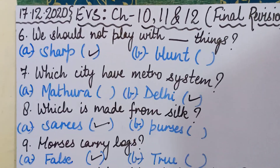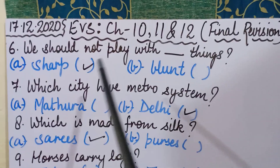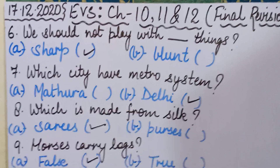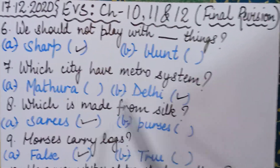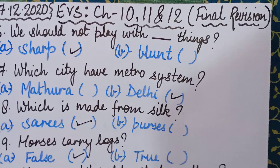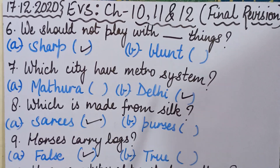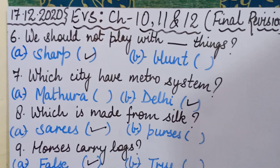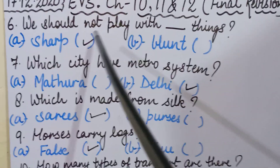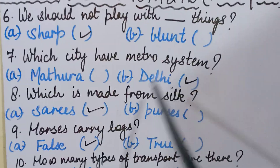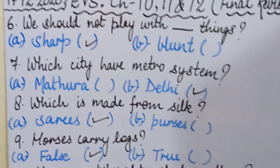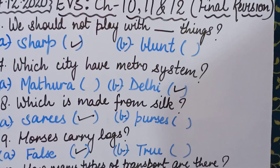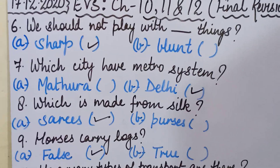Sixth question: we should not play with dash things — sharp or blunt? Sharp means pointed, and blunt means it has no edge. The correct answer is sharp. We should not play with sharp things because we may get hurt.